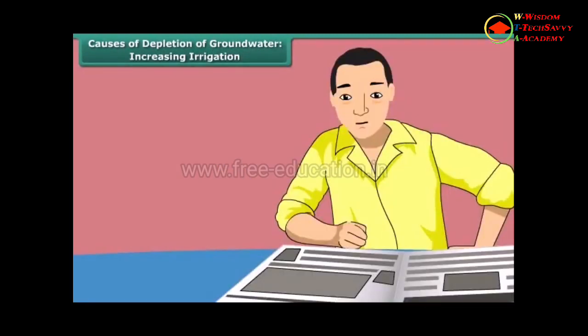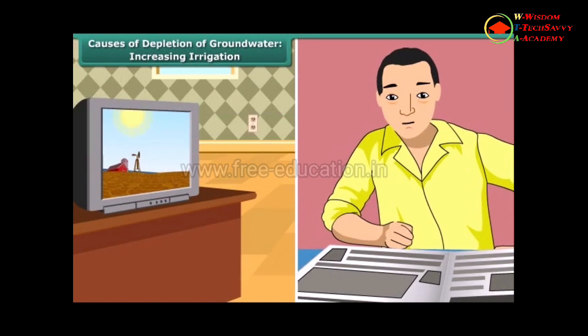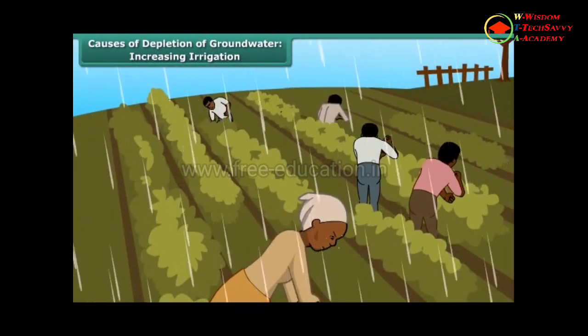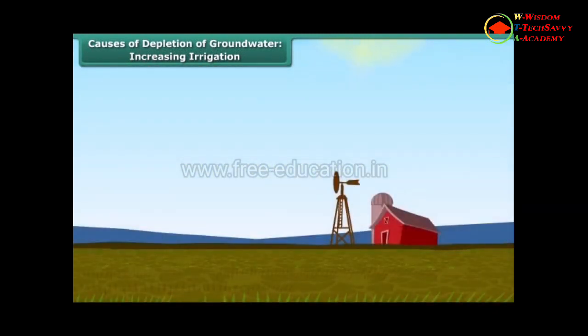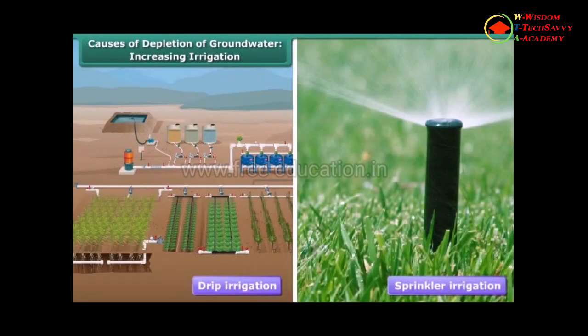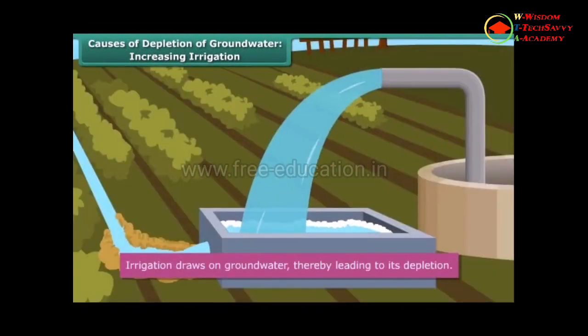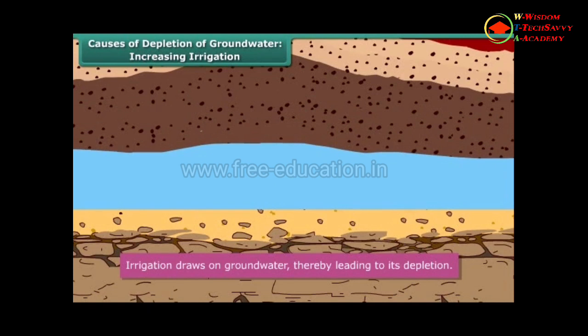You must have read in newspapers and seen on TV the hardship that a failed crop causes to a farmer. In India, even today, a large number of farmers depend on rains to water their fields. Crops fail when rainfall is scanty. Hence, there is a greater emphasis on irrigation. Irrigation systems like drip irrigation, sprinkler irrigation, etc. are promoted to ensure regular water supply to crops whether there is rain or no rain. Irrigation draws on ground water, thereby leading to its depletion.